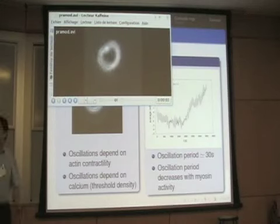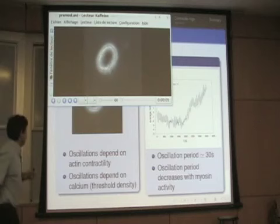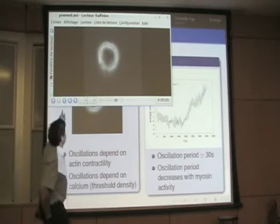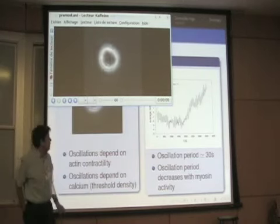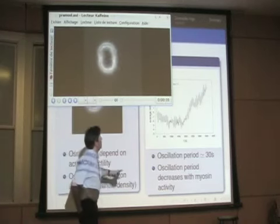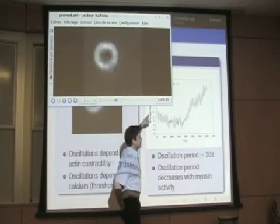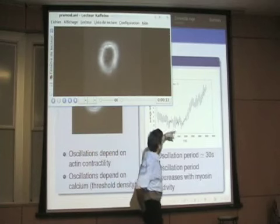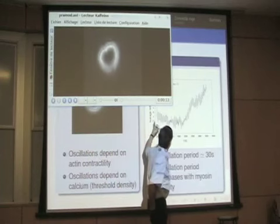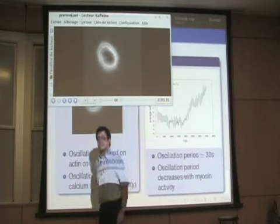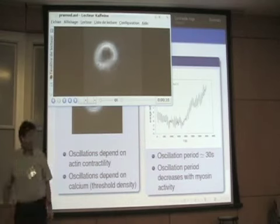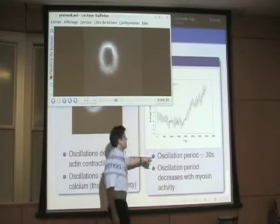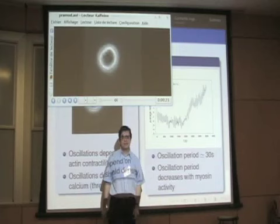The cell can oscillate like this for a few hours. What Pranoid did was cut the cell along one radius, and what is plotted is this radius as a function of time. There is a long-time drift, but if you take the Fourier transform, there is an extremely well-defined period — if I remember correctly, the period in this case was 37 seconds.